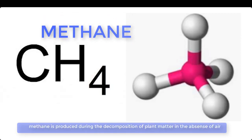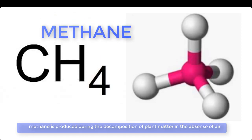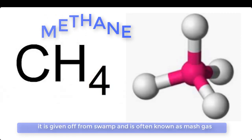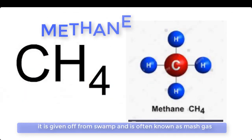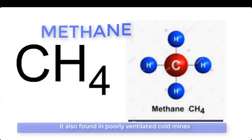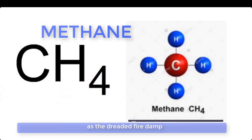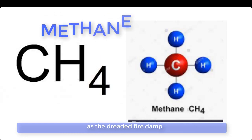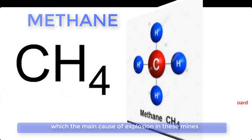Methane is produced during the decomposition of plant matter in the absence of air. It is given up from swamps and is often known as marsh gas. It is also found in poorly ventilated coal mines as the dreaded fire damp, which is the main cause of explosion in these mines.